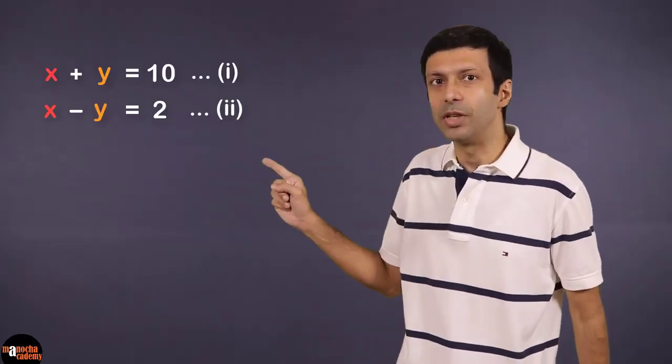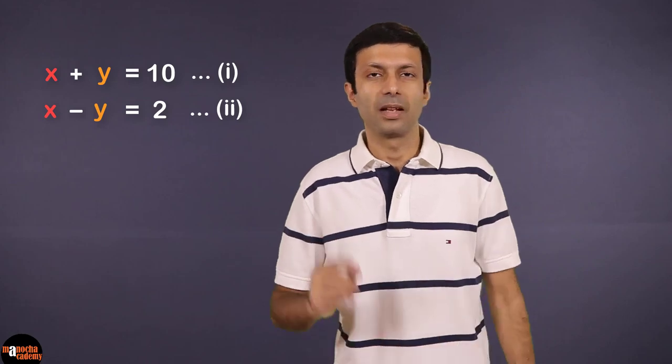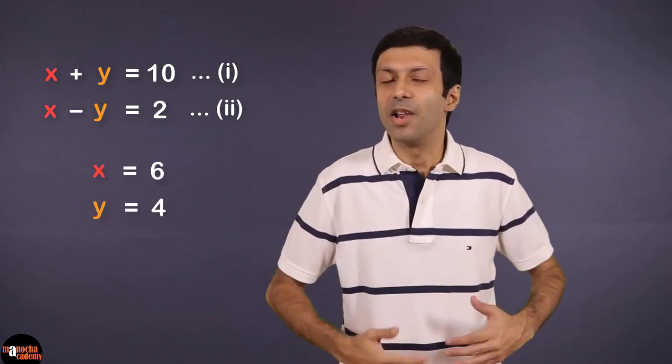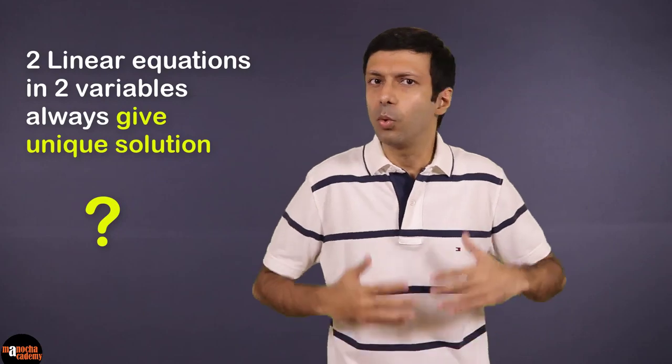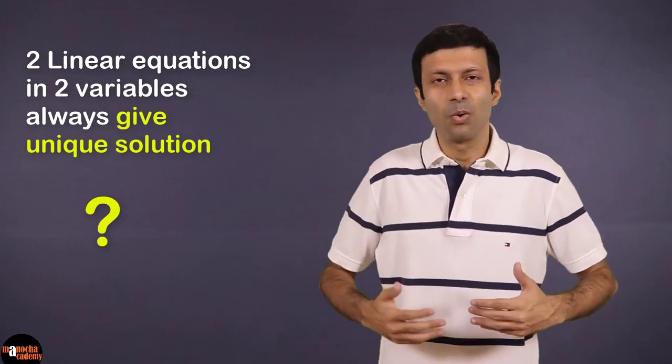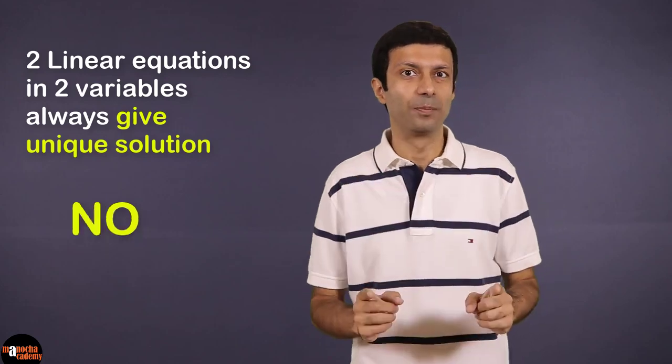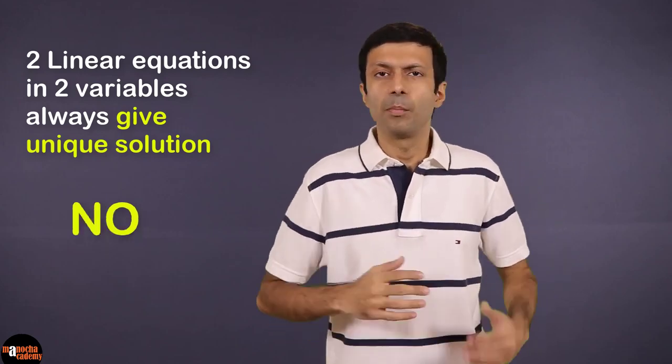When we solved our pair of linear equations in two variables, we got a unique answer: x equal to 6 and y equal to 4. Now an interesting question is, if you have two linear equations in two variables, do you always get a unique solution? What do you think? The correct answer is no. They need not give us a unique solution.